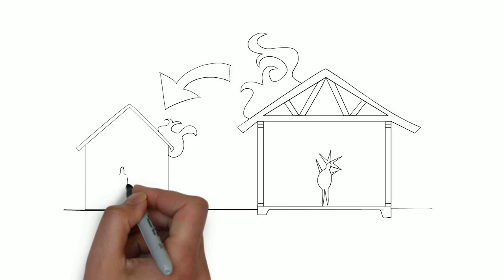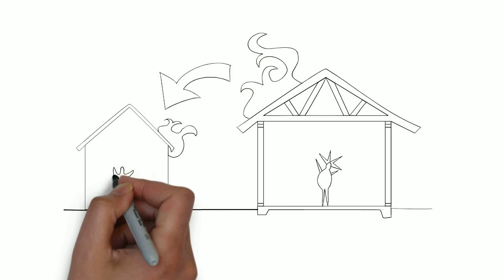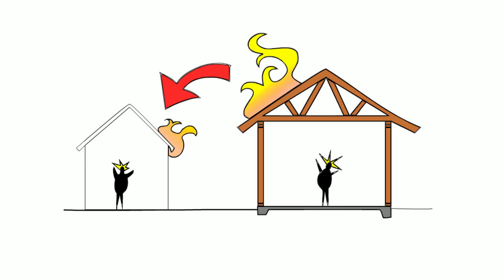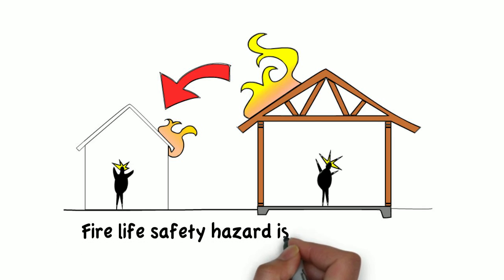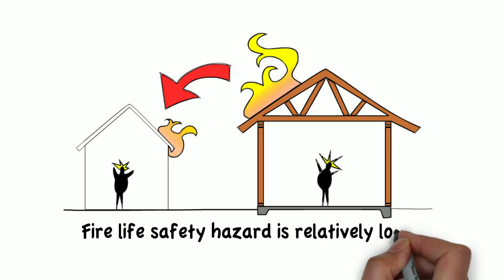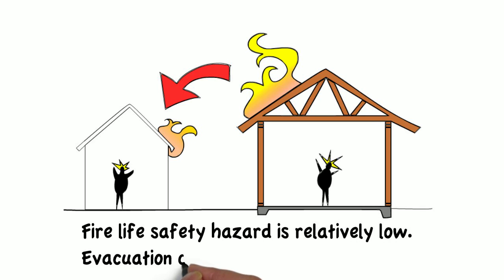Yet, using lumber or wood, such as 2x4 studs or wood trusses, is perfectly acceptable for these types of structures. The reason is that the risk of life loss in a structure this small is relatively low. In most instances, people can evacuate the residence relatively quickly.